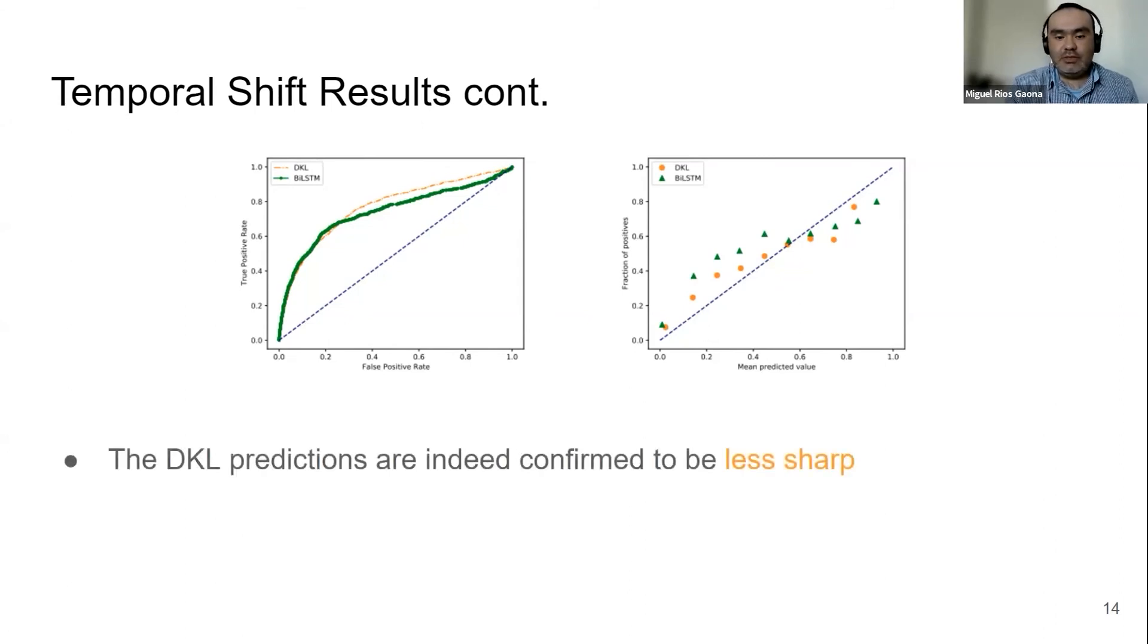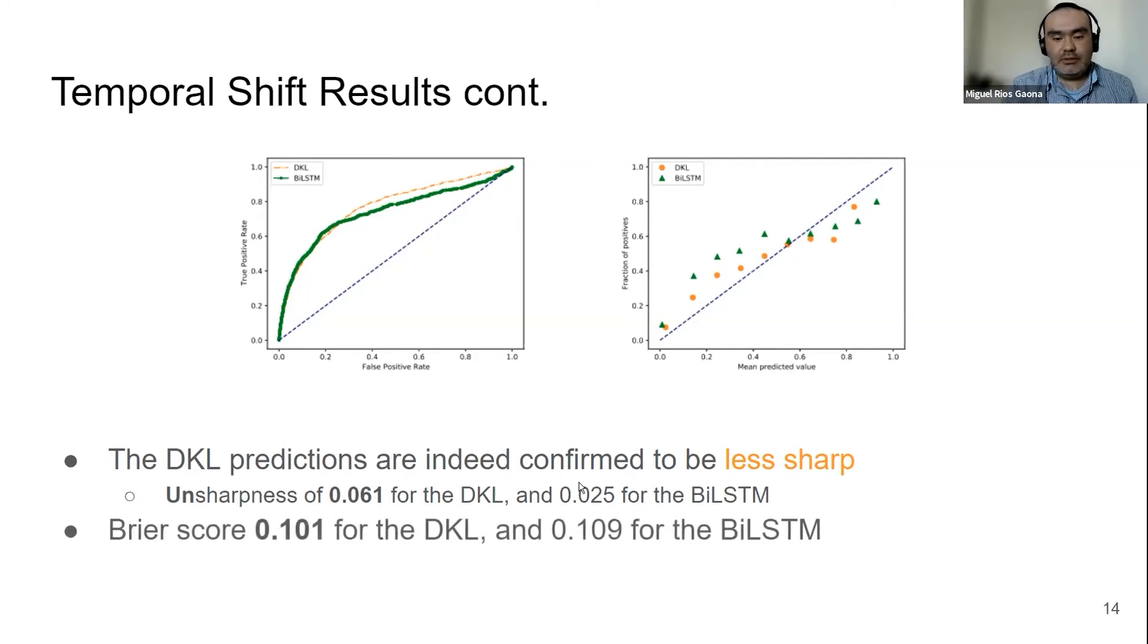And we can confirm that these predictions are less sharp with our sharpness metric. The higher, the better. 0.061 for the deep kernel learning, 0.025 for the bi-LSTM. And the Brier score is also better, lower for the deep kernel learning than the bi-LSTM.